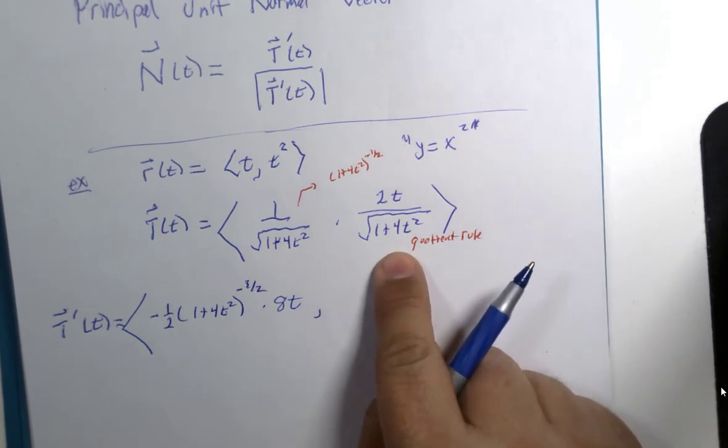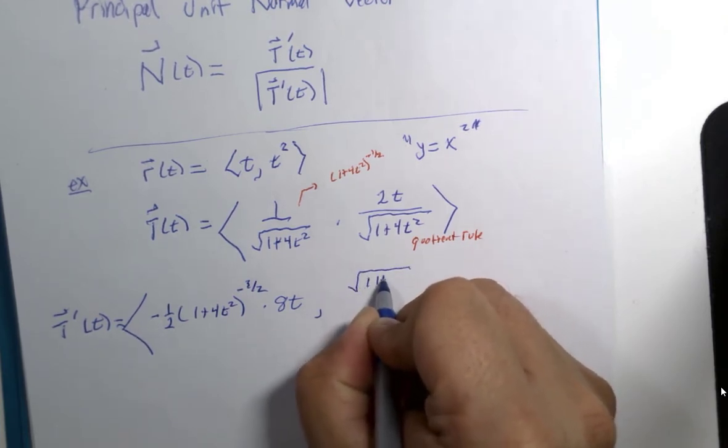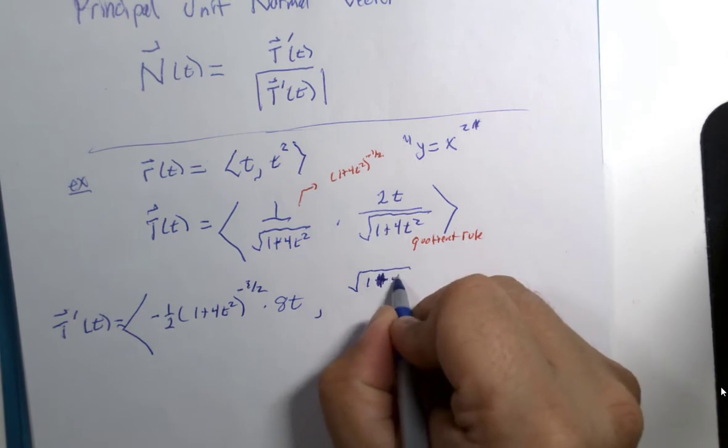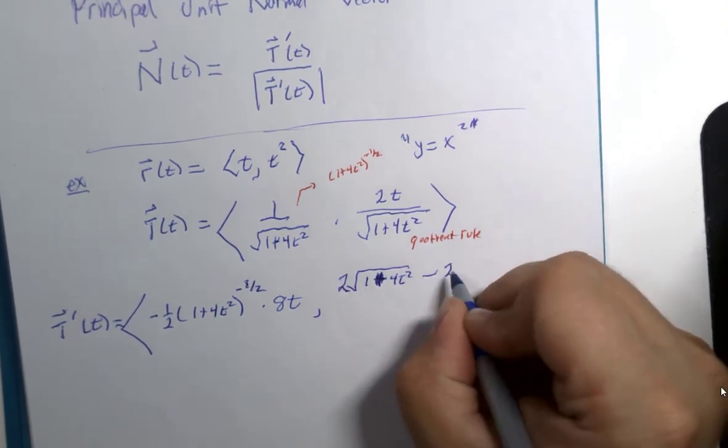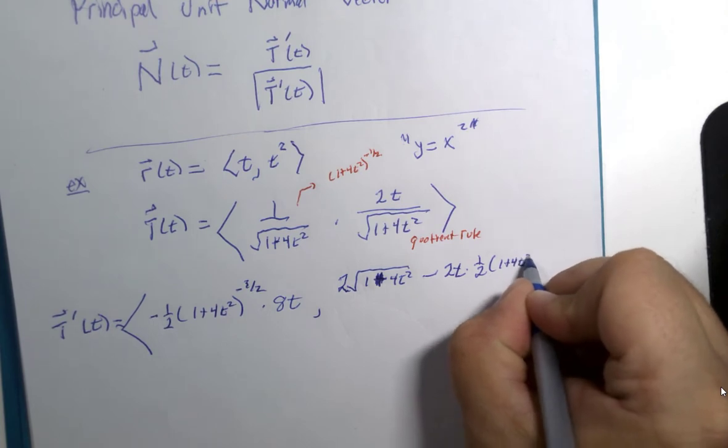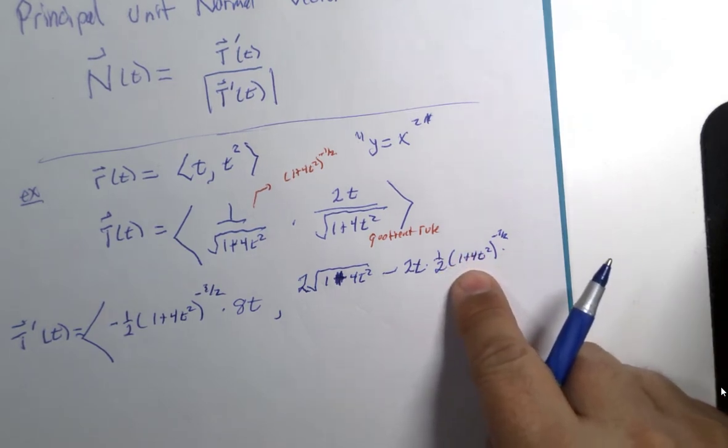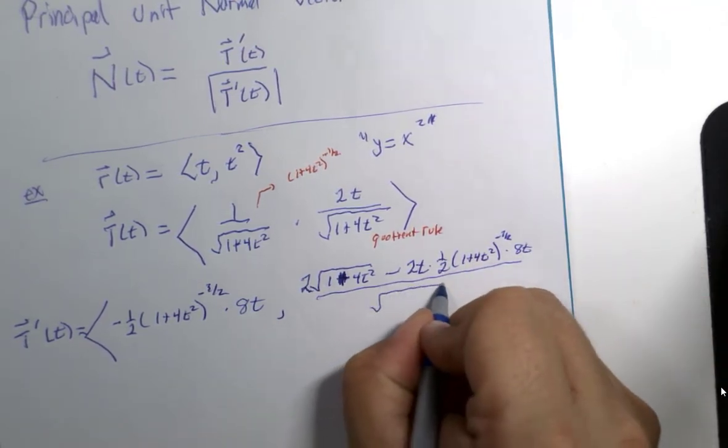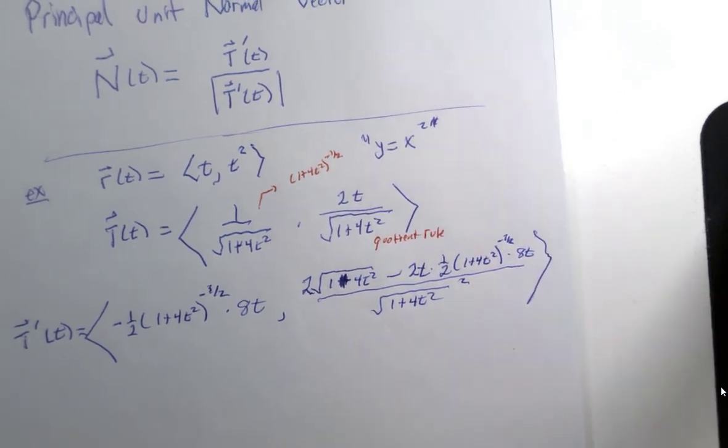Now the quotient rule here, low function 1 plus 4t squared times the derivative of 2t which is 2 minus upper function 2t and the derivative of the lower function is one half, 1 plus 4t squared to the negative half power times 8t and that whole thing is over the denominator squared to the second power.